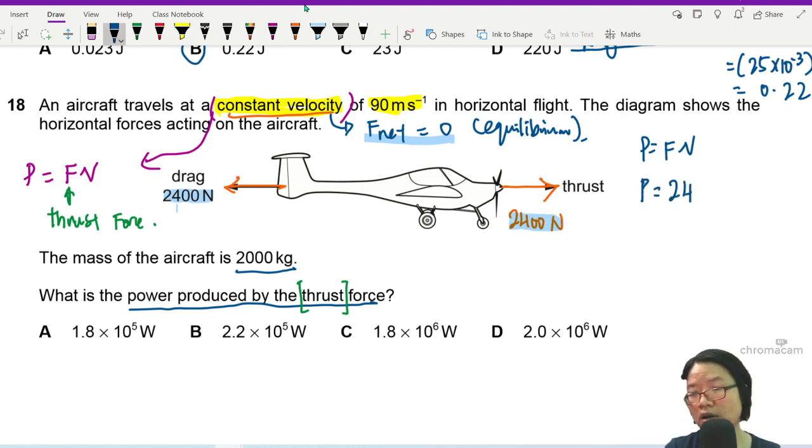The forward thrust is 2400. And the velocity is 90. So this then would be a beautiful 2.16 times 10 to the power of 5. Which is B.